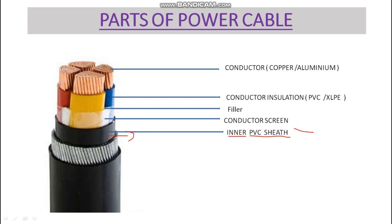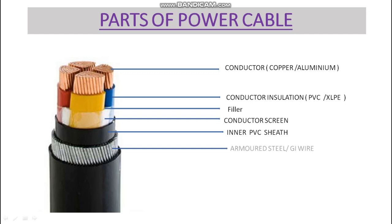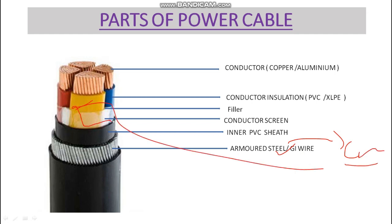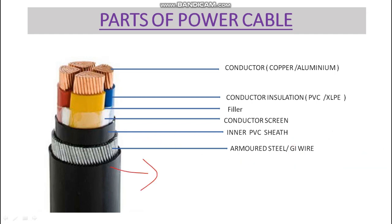Above the conductor screen we have an inner PVC cover, which is the inner sheath made of polyvinyl chloride. Above that is the armoring — it can be steel tape or GI wires, most commonly steel type — which provides mechanical protection. Finally, there is the outer PVC sheath, which is the enclosure or outer cover.